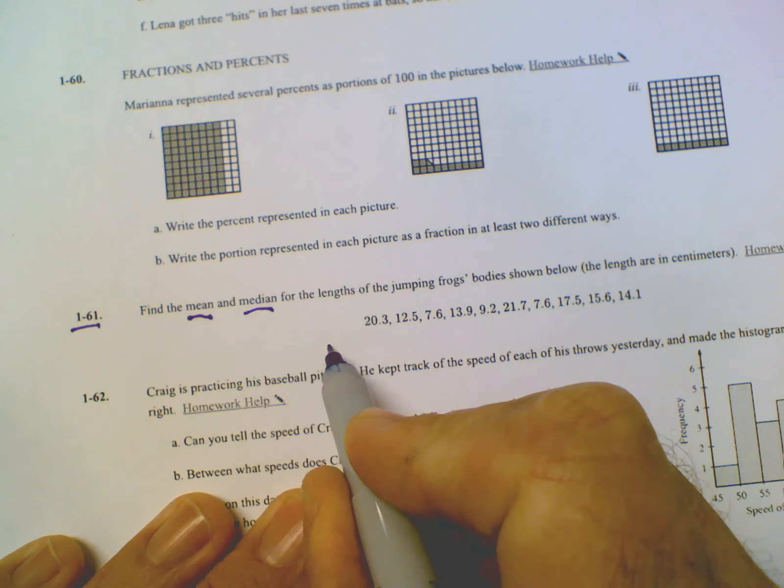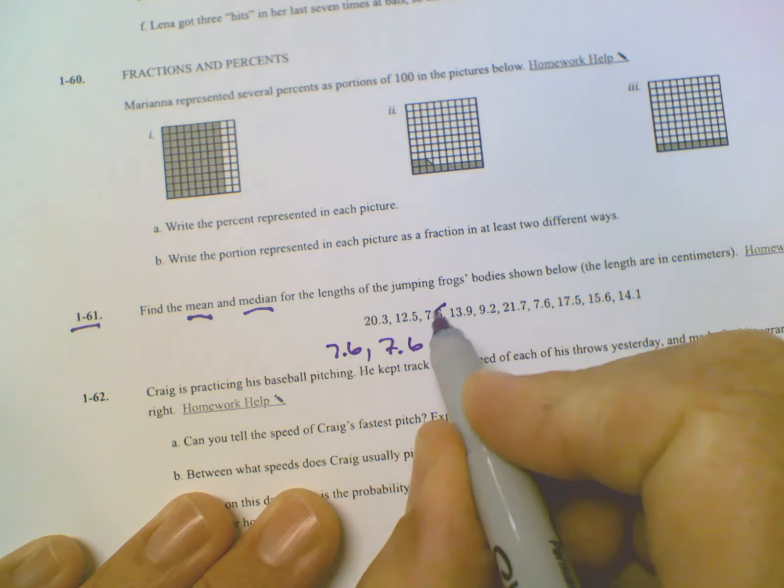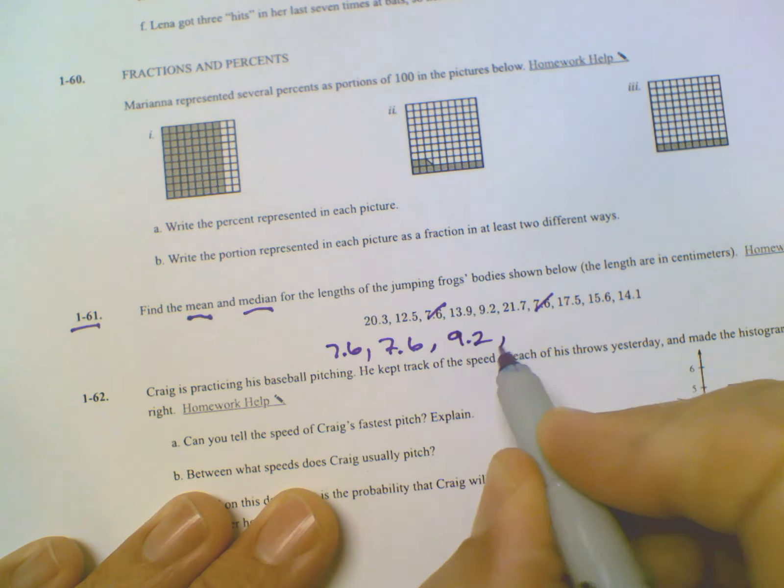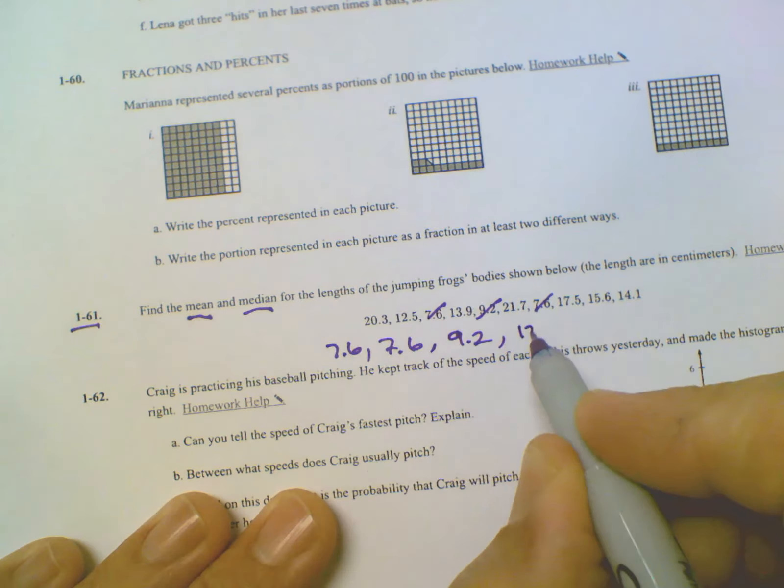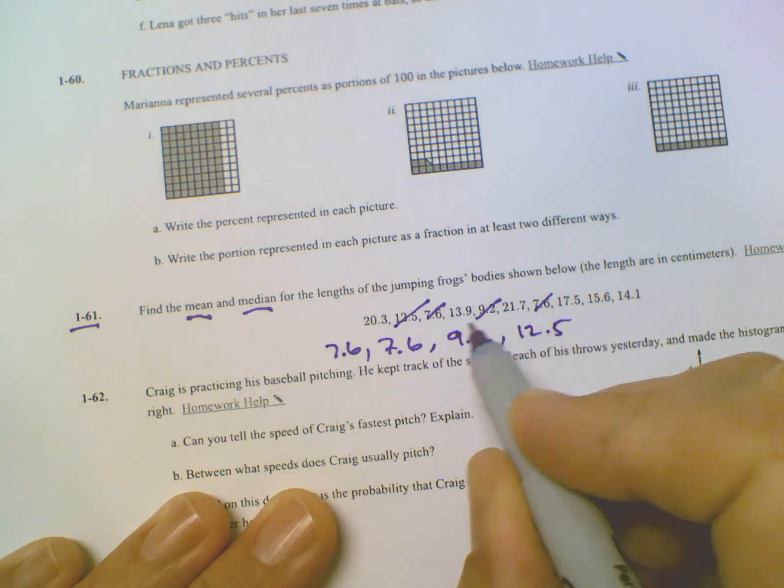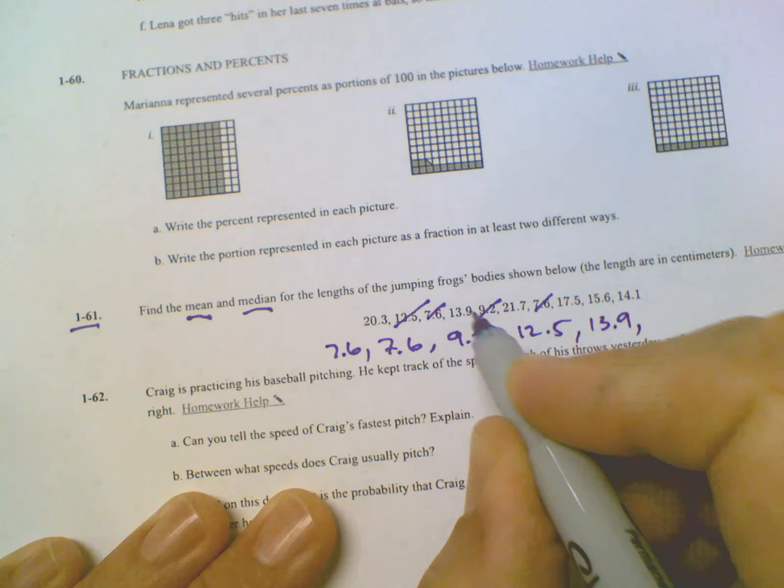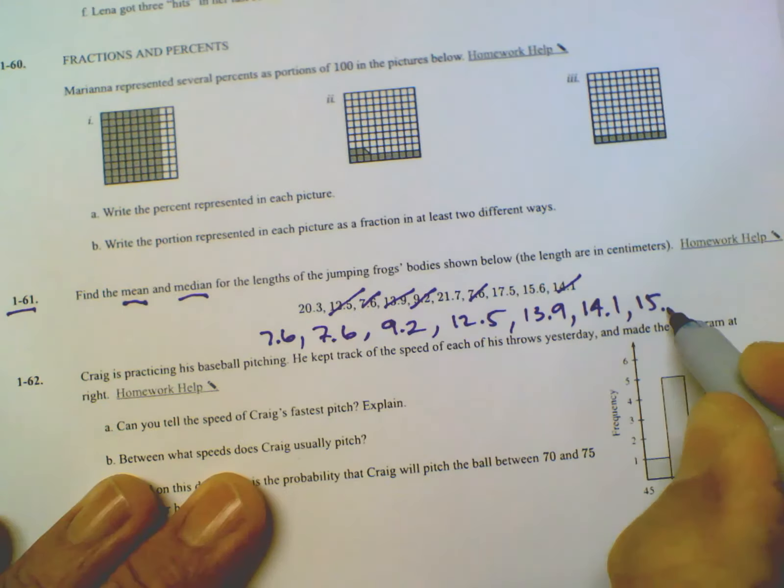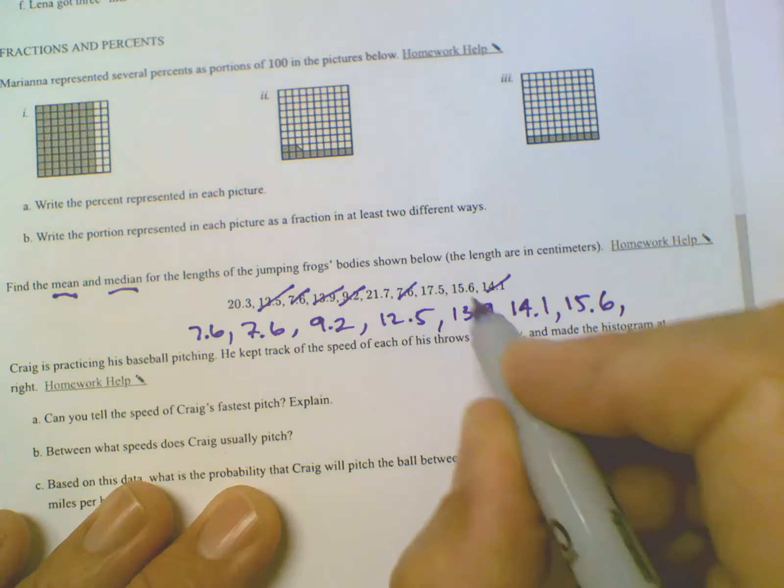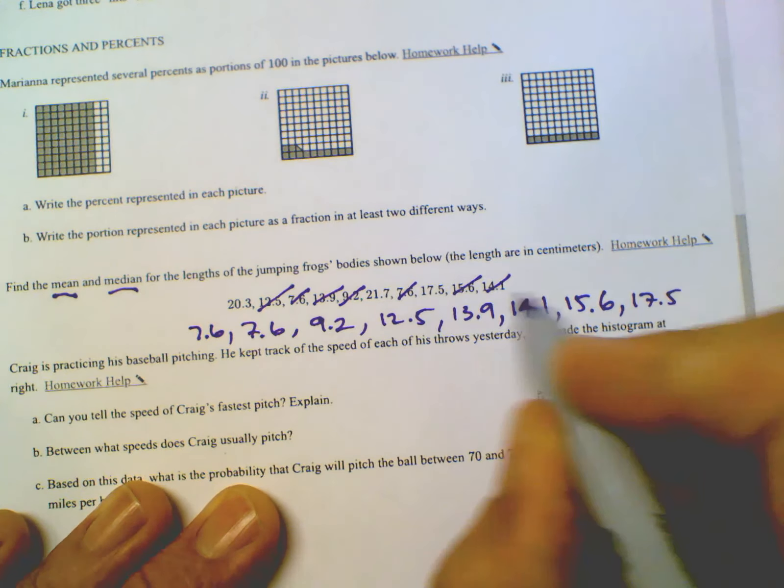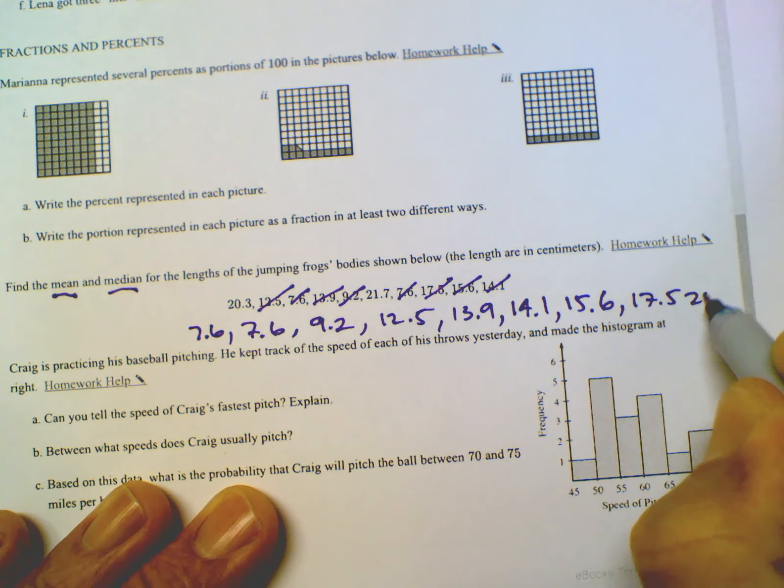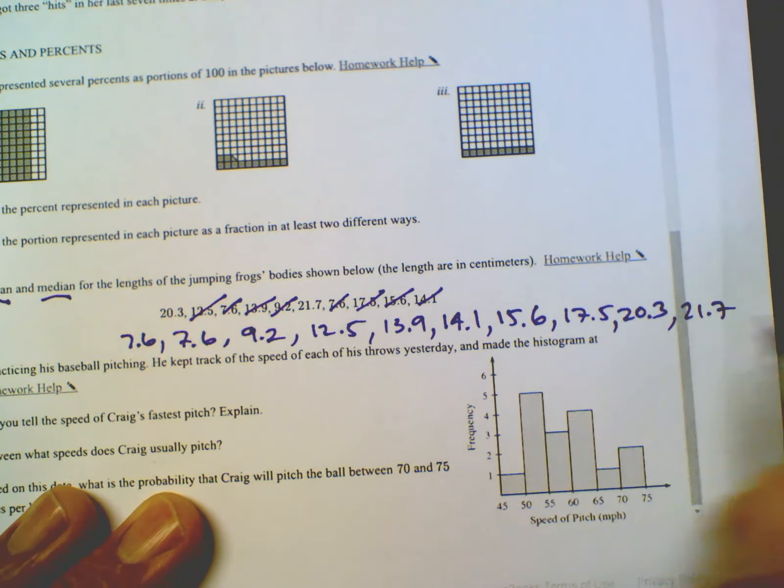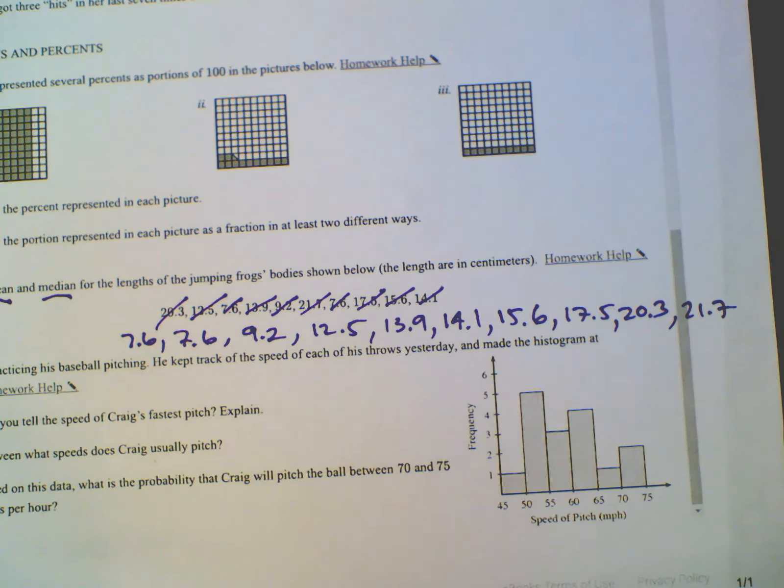I can quickly kind of look through that. Let's go 7.6, 7.6. And then I kind of cross them off as I go so that way I'm not losing track here. And then the next lowest would be 9.2. Cross that off. Let me see quickly. The next one looks like it's 12.5. Cross that off. And then 13.9. And then 14.1. And then 15.6. Let's see where I'm at. And then 17.5. And it looks like the last two. So 20.3. And 21.7.